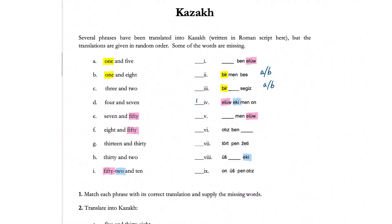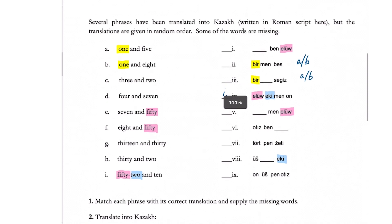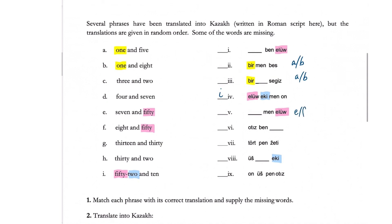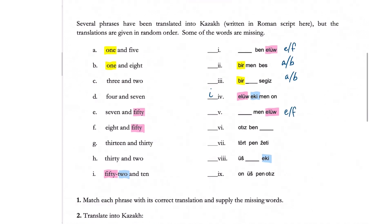Then we can figure out what 'I' is. In this case, 'I' matches to number four, number one, and number five — we have two options. So we are going to list the options on the side so that we don't get confused. We can do that with 'two' as well, so whenever we figure out a few options for each of them, we write those options down.